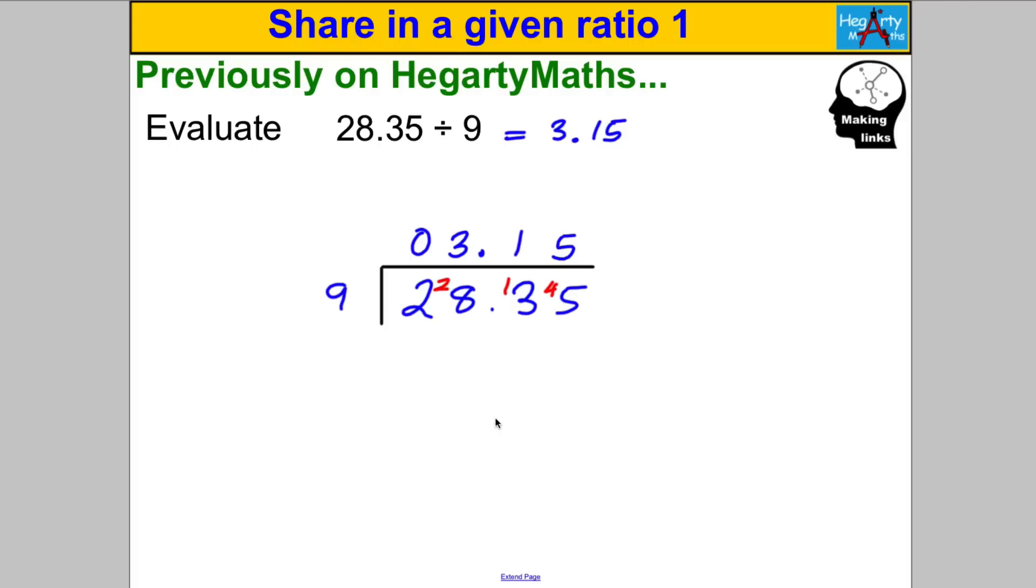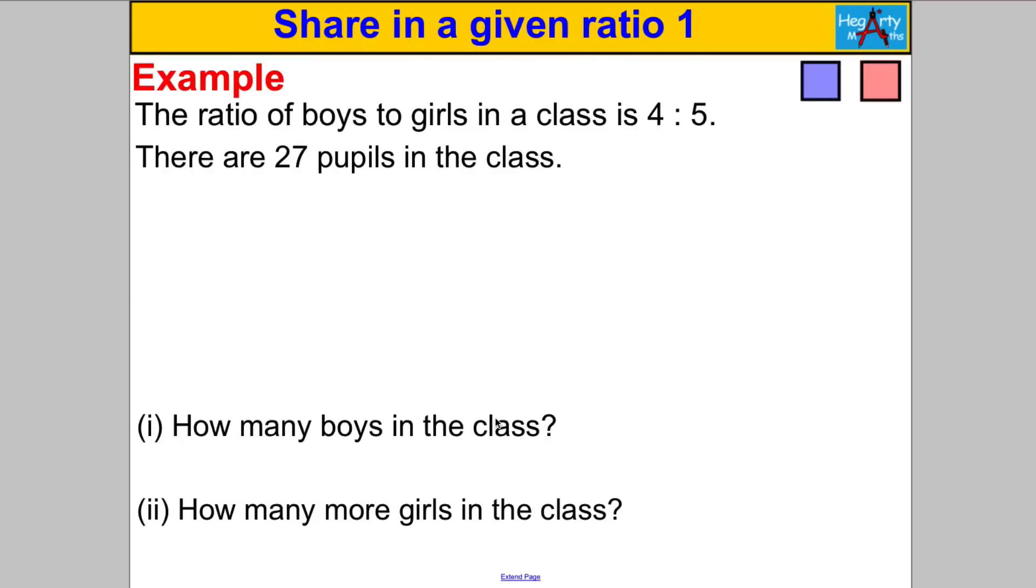Right, let's get on and do some sharing in a given ratio. This is the type of problem we're going to talk about: the ratio of boys to girls in the class is 4 to 5. There are 27 pupils in total in the class. How many boys in the class? How many more girls in the class? Now, I always with these type of problems absolutely want you to draw a picture. It makes life so much easier, it stops you from making mistakes.